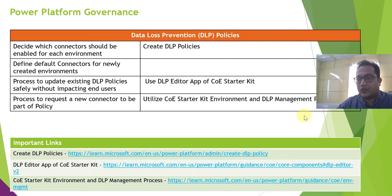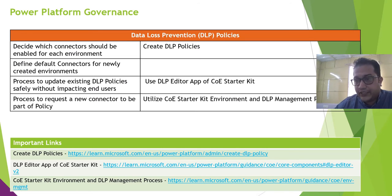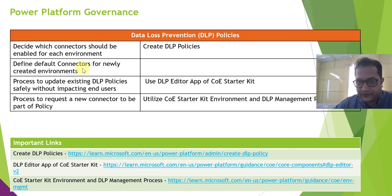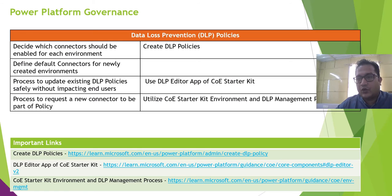Another very important strategy when talking about Power Platform governance is DLP — Data Loss Prevention policy. You have to decide, based on connectors, which should be enabled or disabled in your environment, and create policies accordingly. There are hundreds of connectors in Power Platform, and you may not want citizen developers or pro developers to use all of them. You can define default connections for newly created environments, have a process to update existing DLP policies using the COE Starter Kit, and a process to request a new connector to be part of the policy.